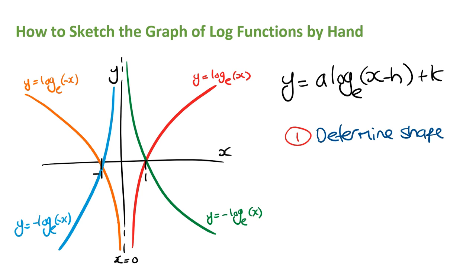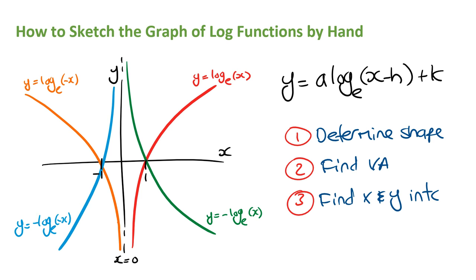The second step is to work out the equation of the vertical asymptote. The third step is to find the x and y intercepts if there are going to be any. The last step is to label and mark these features on the axes and then sketch the graph. And that's it pretty much for the theory — now let's get into some examples.